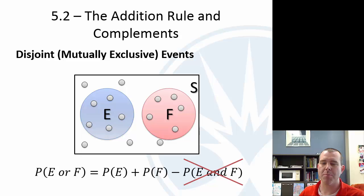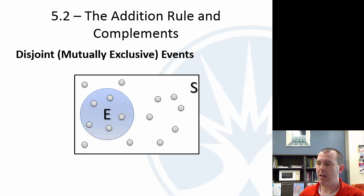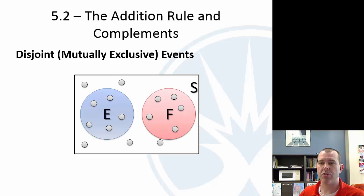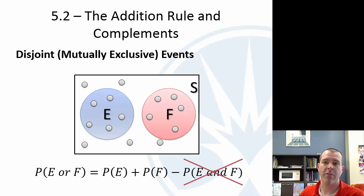For me, that's not really valuable. You don't need a special rule because you can always just use the general rule. And if they're disjoint, then that probability of E and F will be zero.